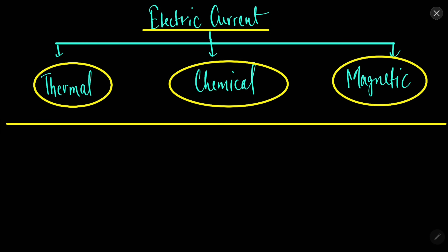Electric current shows these three effects. This means that electric current shows some thermal changes while it is flowing, electric current can show some chemical changes while it is flowing, and electric current can also produce magnetic effects while it is flowing. So first we will start with the thermal effects of electric current.